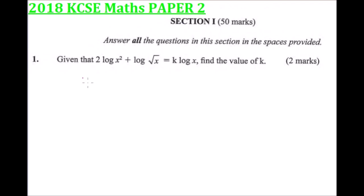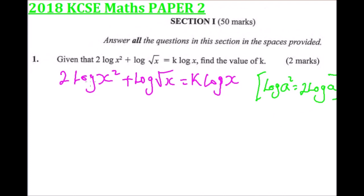We are going to apply the laws of logarithms. The question is 2 log x² + log √x = k log x. Remember, if we have a log a², we can write it as 2 log a. Applying this rule, the 2 will come up here. We have 2 times 2 equals 4, so this becomes log x⁴ plus log...